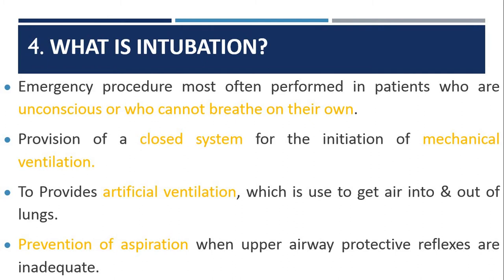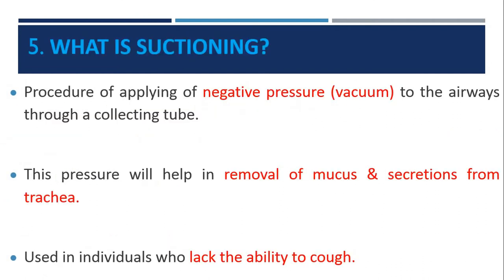Once intubation is performed and the endotracheal or tracheostomy tube is placed, it can be connected to the ventilator to get air in and out of the lungs. It can also be used for prevention of aspiration when upper airway protective reflexes are inadequate.